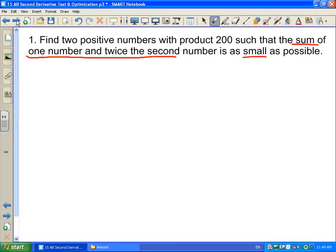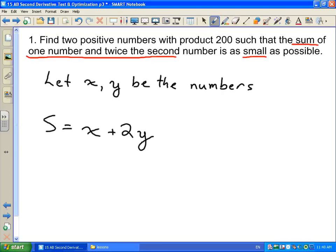So let's choose some variables here. Let x and y be the numbers. And the thing that we want to optimize we'll call S, our sum: the sum of one number x plus twice the second number, 2y, and we want to make that as small as possible. So this is what we want to optimize here.